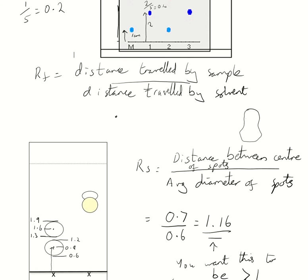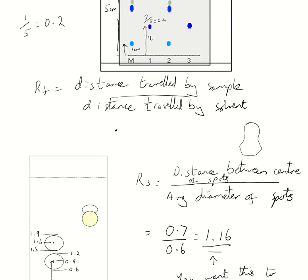So, RF, distance travelled by sample over distance travelled by solvent. And RS, distance between the centre of the spots over the average diameter. And this one will always be less than 1. This one, you're hoping is more than 1 to say your practical has gone well and you've got two dots resolved.